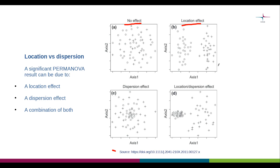On the bottom left we have no location effect but we have a dispersion effect. Data points from the two groups overlap in the ordination space, but one of the groups denoted by the circle symbols shows less within-sample variation than the other group, which is more widely distributed.